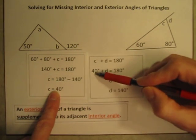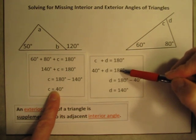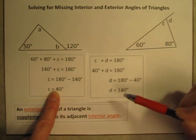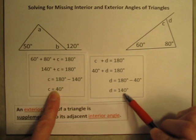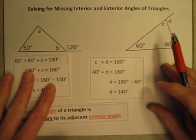So I know then that angle C plus angle D equals 180. And since I just solved that C is 40 degrees, I can put that into this equation. So 40 plus D is 180. Which means D would have to be 140 degrees. 180 minus 40. D has to be 140 degrees.